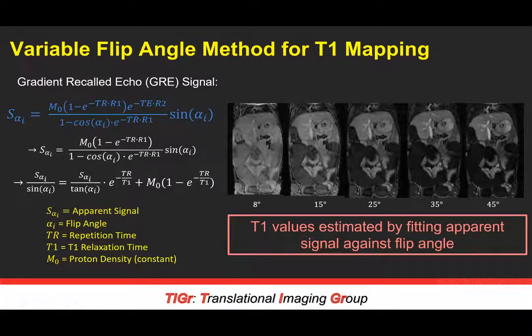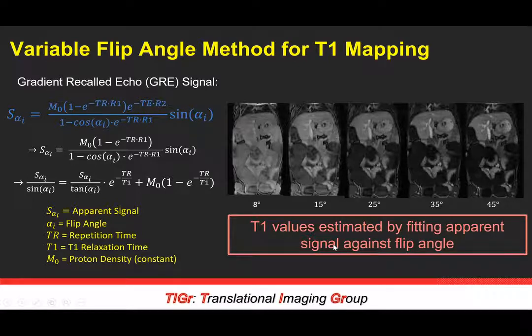By doing this, we're able to calculate T1 values both pre- and post-contrast for any anatomical region of interest in the field of view. In this case we're most interested in the placenta, which is that crescent band along the fetal placental unit.